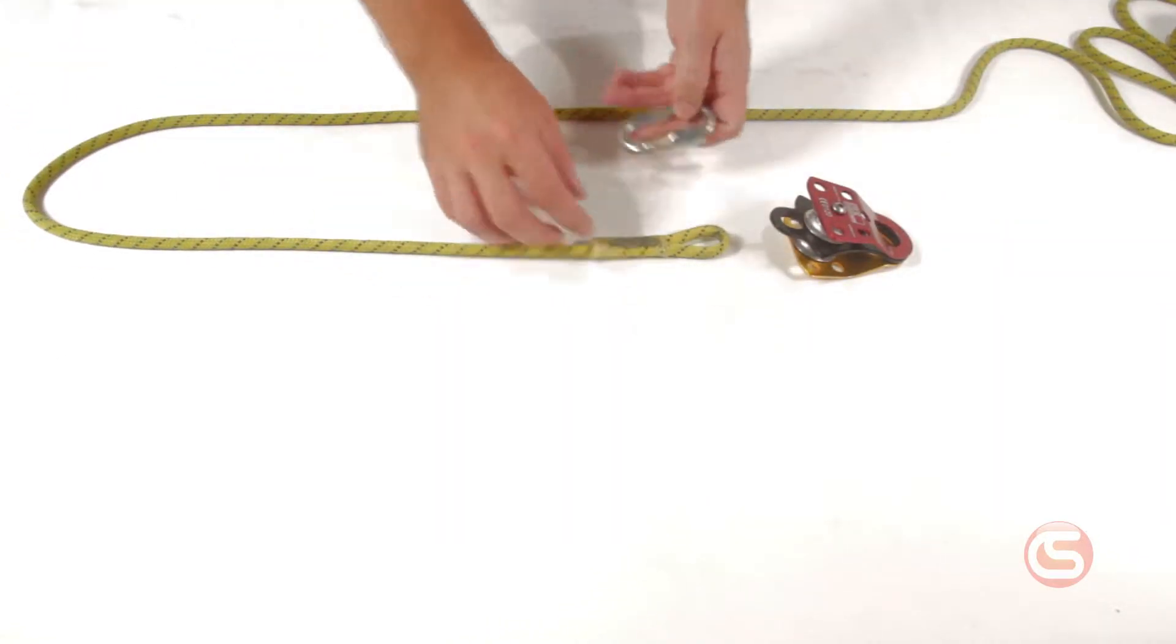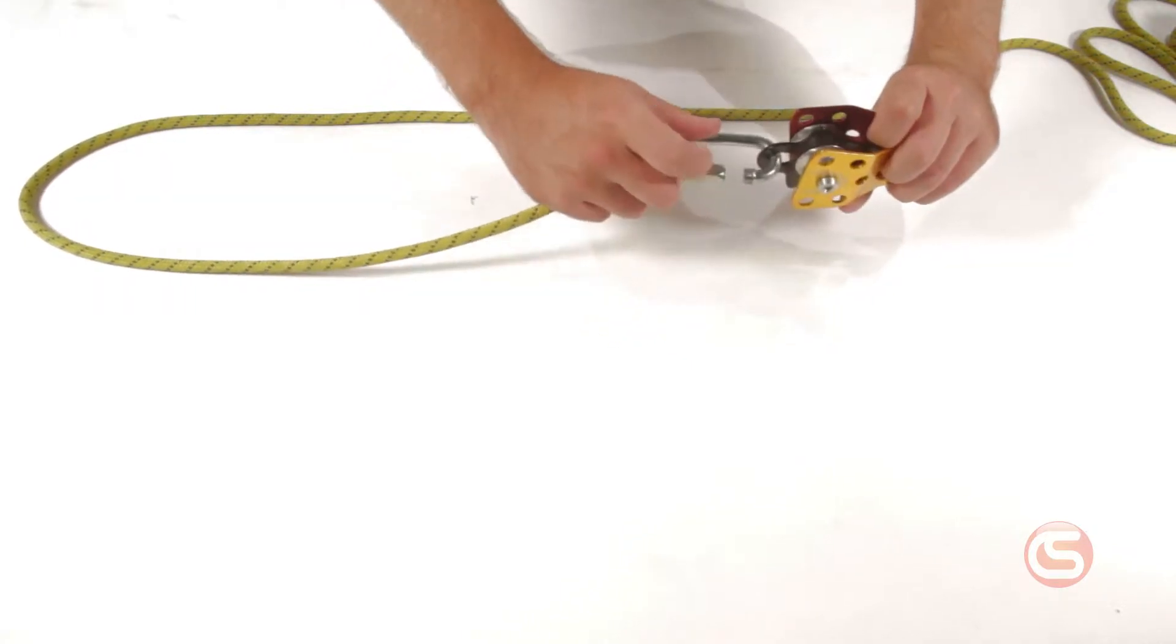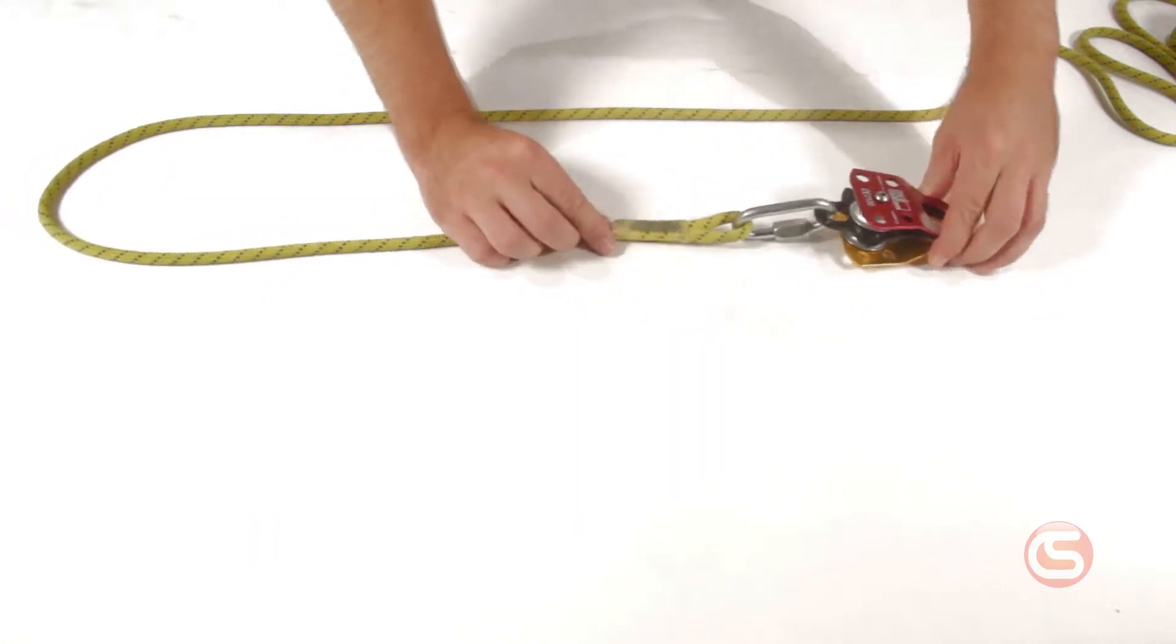Now, take the quicklink, the terminated end of the rope, and one of the double-sheave pulleys, and connect those like so. And since we're done with that section, we can go ahead and lock the quicklink.